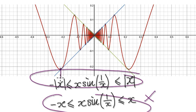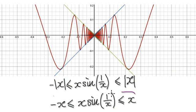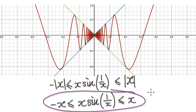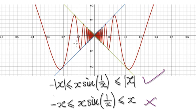We have to use the absolute sign here — this would be correct, but this one here would not be correct. This thing here would be correct if x is always positive. But then when you enter the negative realm, this would be incorrect. This would be correct.